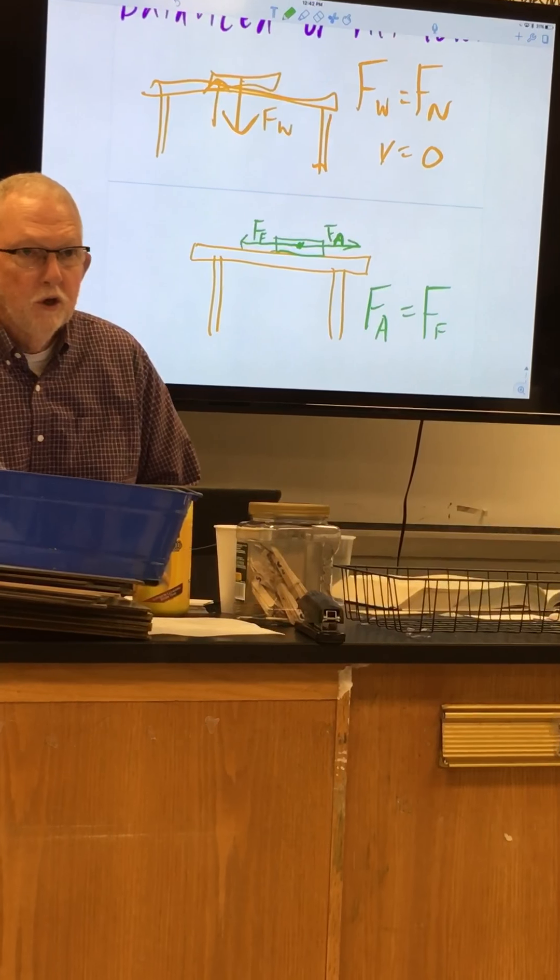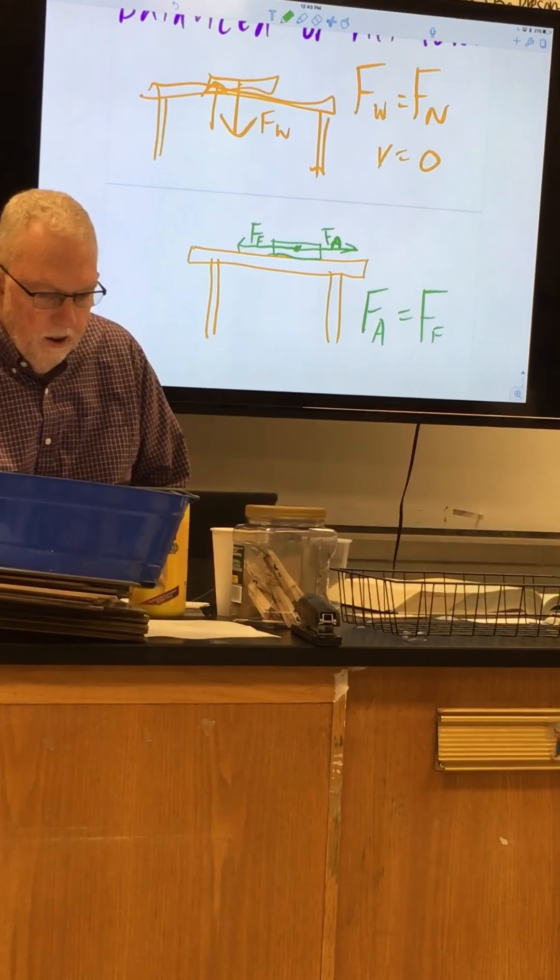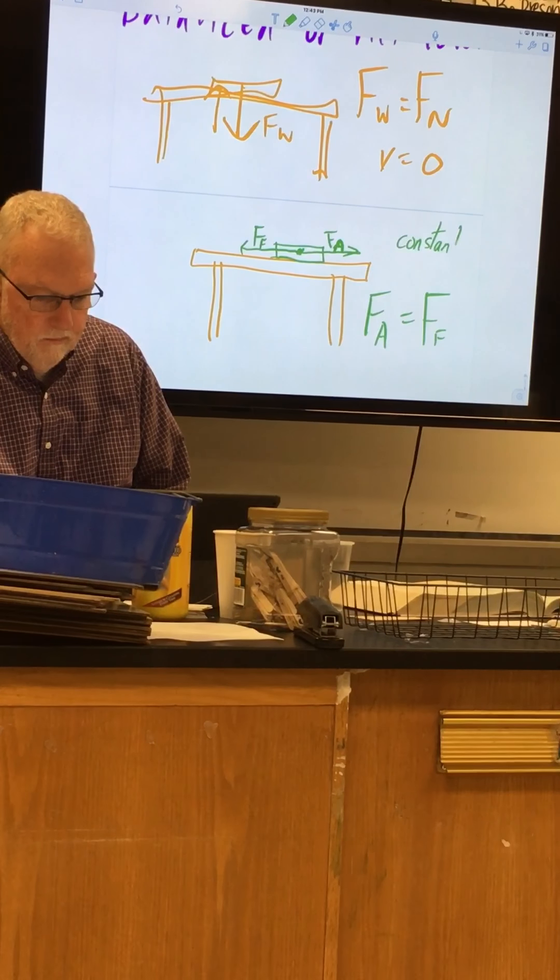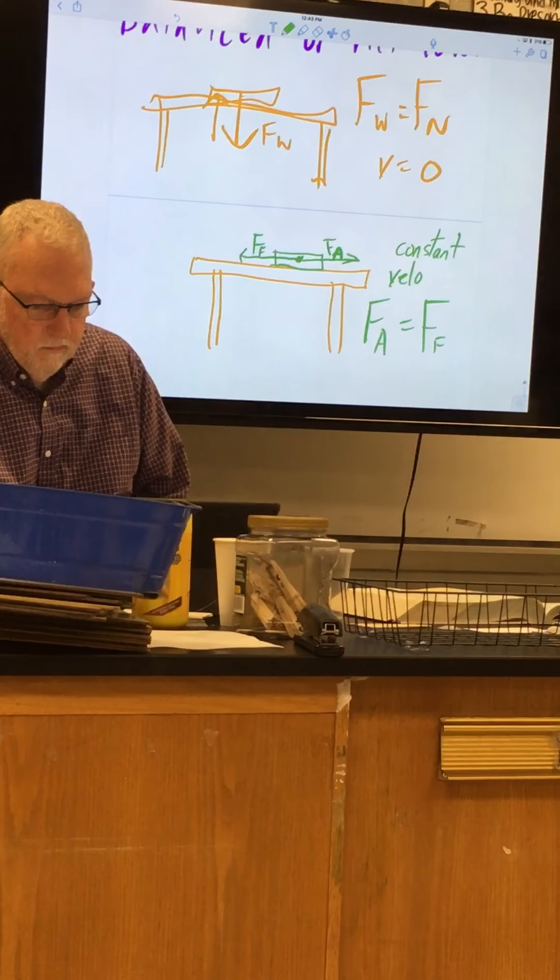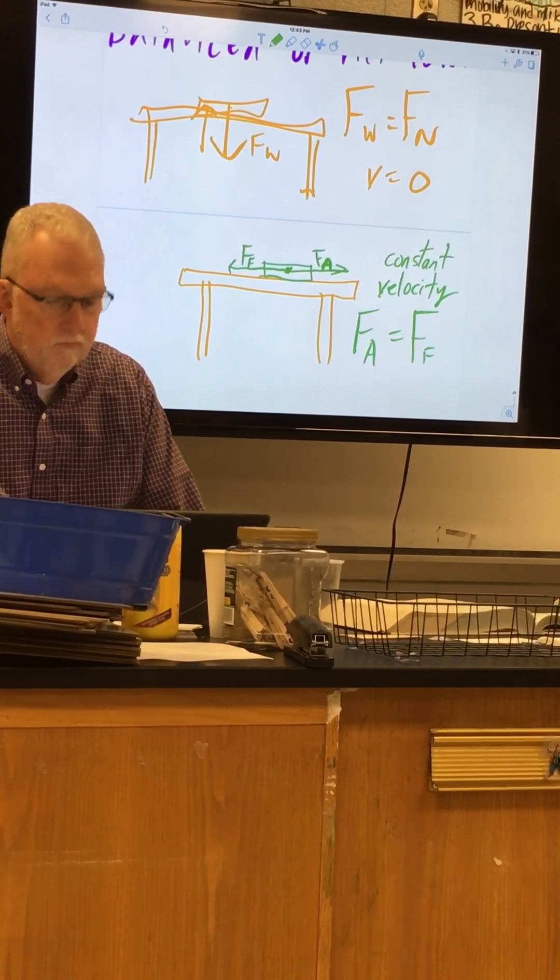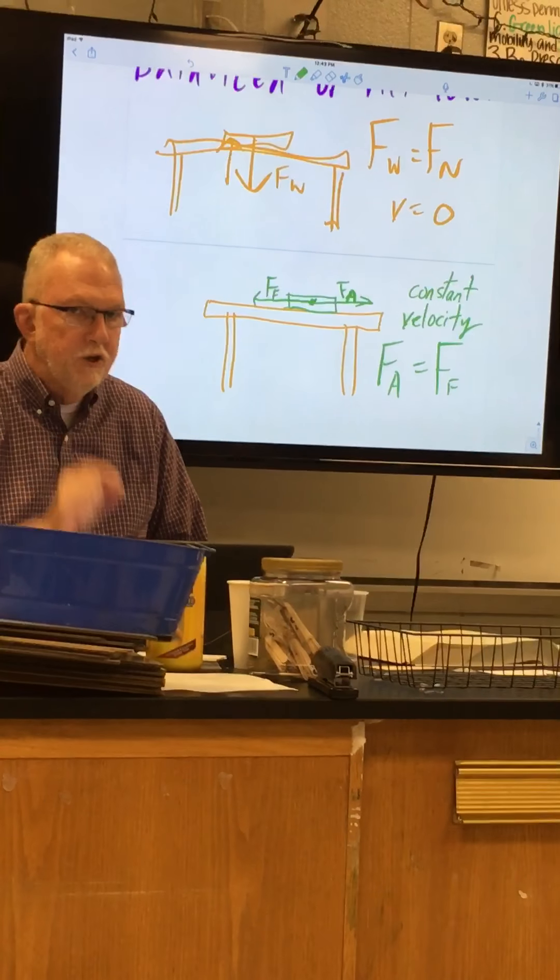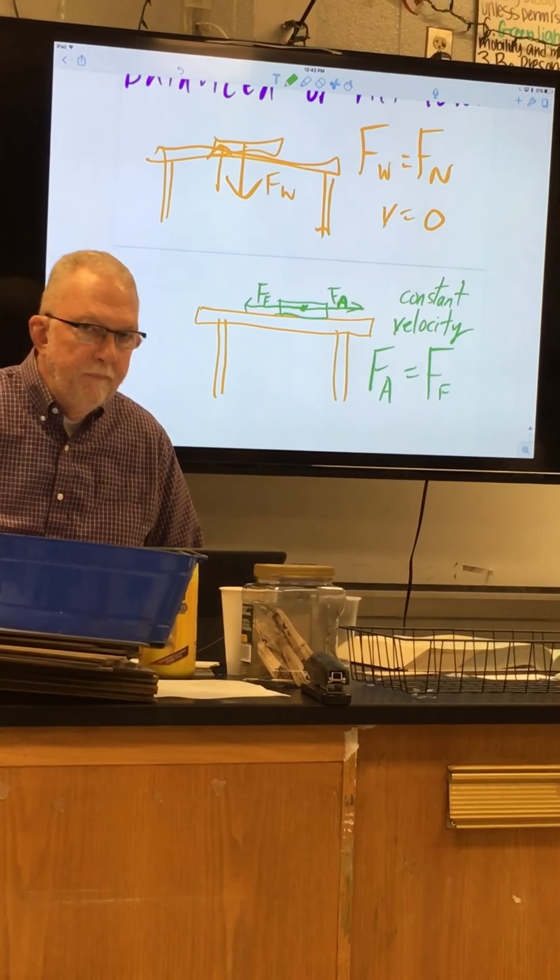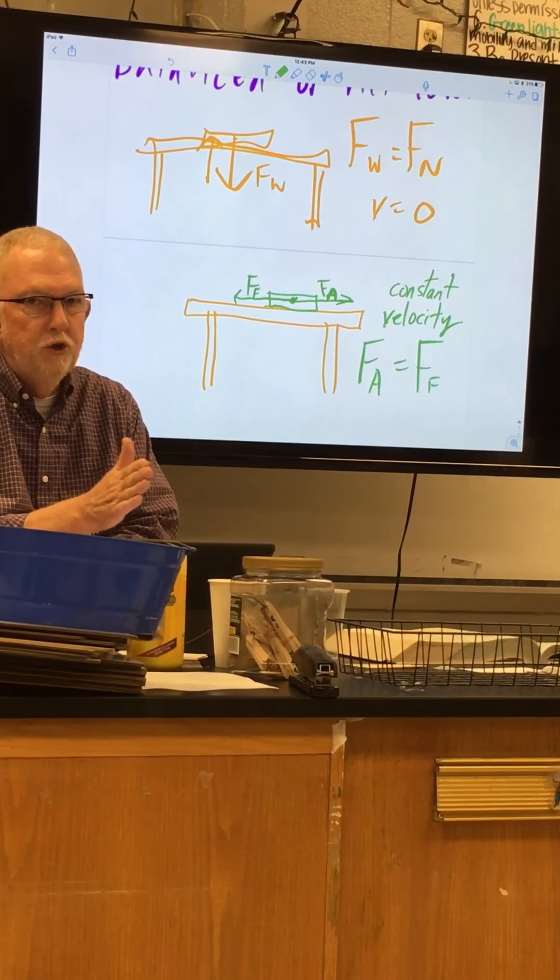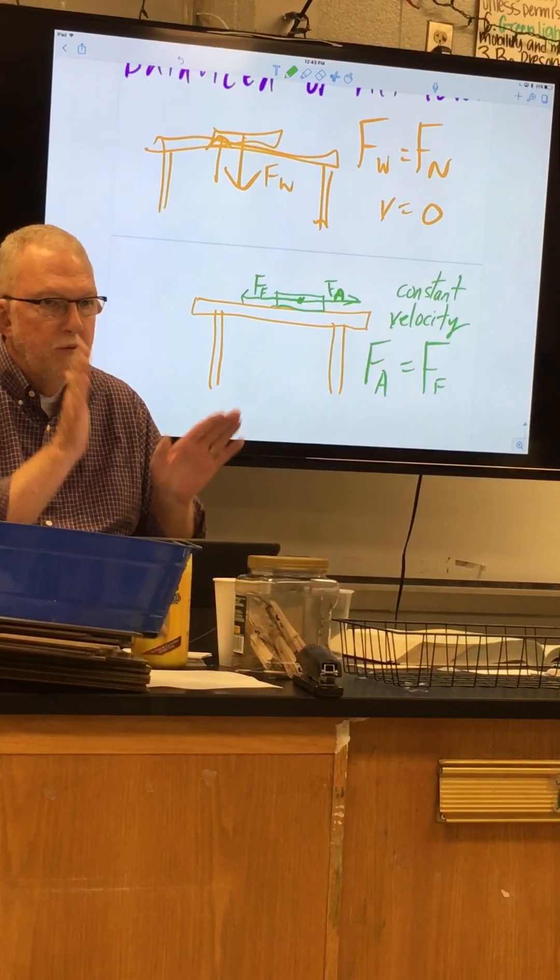The velocity is not zero, it's constant velocity other than zero. So in order for that object to move at a constant velocity, you have to be pushing it and the table has to resist motion. They have to be exactly equal for it to have constant velocity.